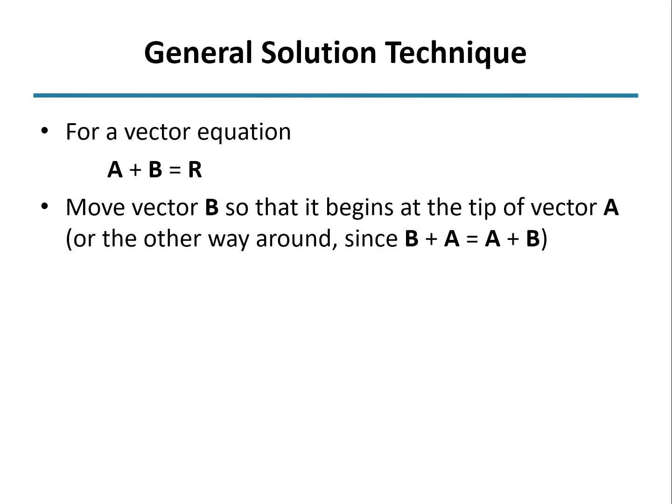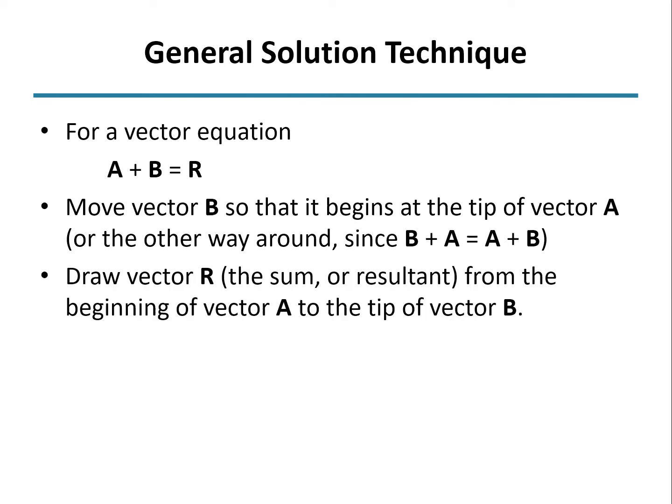If we have a vector equation A plus B equals R, we place those vectors tip to tail. In other words, we move B so that it begins at the tip of vector A. We can switch the order of those, because when we add two vectors together, that is commutative. We draw the vector R, which is the resultant or sum, from the beginning of A to the tip of B, and then solve for those unknowns.